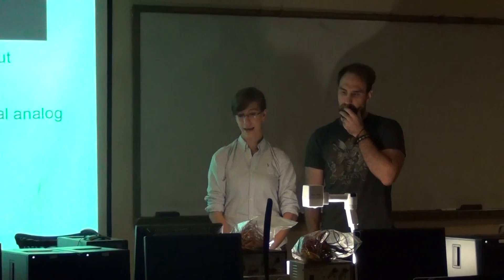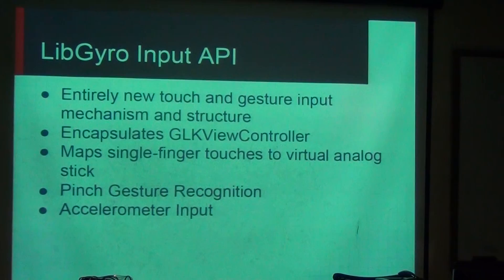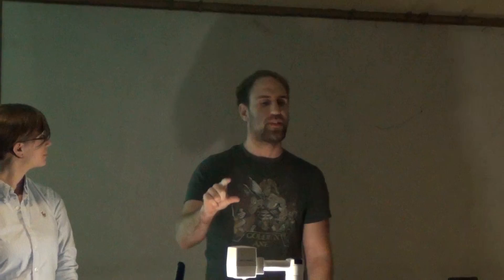For the LibGyro input API we created an entirely new touch and gesture input mechanism structure. It encapsulates the GLK view controller and maps single finger touches to virtual analog sticks. So the position of your finger on the phone is relative to the character, and that determines the direction the character moves. And we have pinch gesture recognition so we can zoom out and zoom in, and we have the accelerometer. Probably the pinch gesture thing is just for debug. We don't want you to zoom out and see the entire level that you're not supposed to see, but for us it's cool.